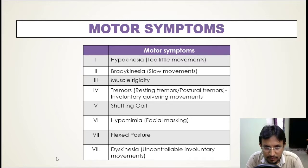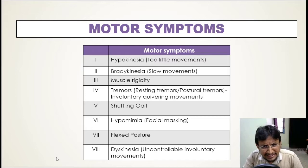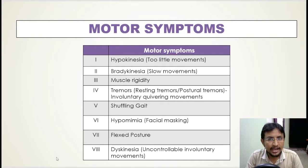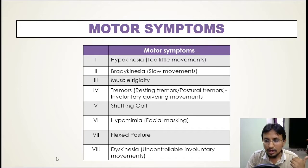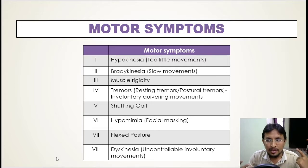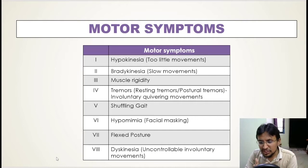Even when these patients manage to initiate a voluntary movement, those movements are slow — that is bradykinesia. 'Brady' means slow; bradycardia, for instance, means slow heartbeat. So bradykinesia refers to slow movements. The first part of the symptom is hypokinesia — difficulty initiating movement — and the second part, bradykinesia, is that when they do initiate, the movement is very slow.